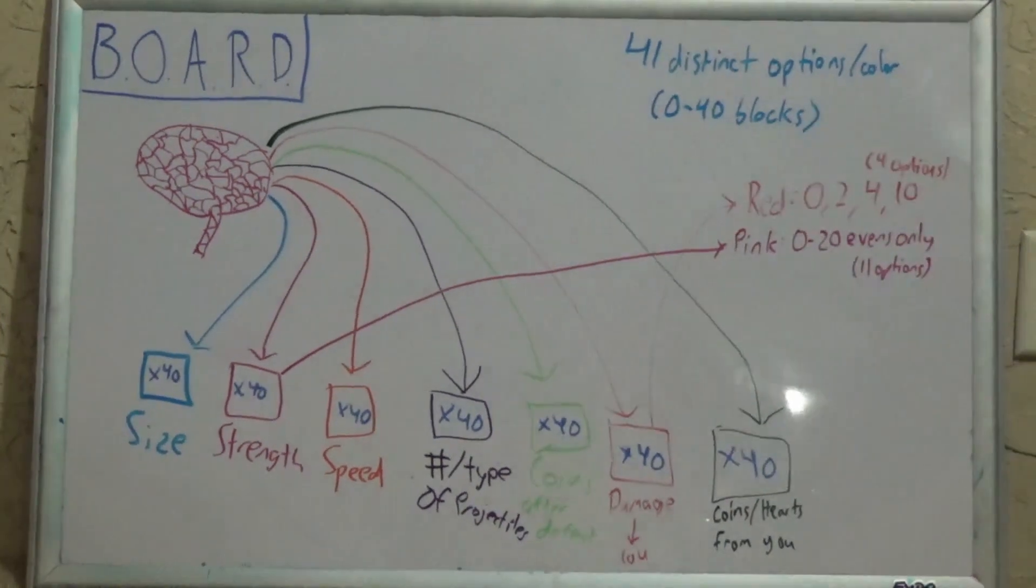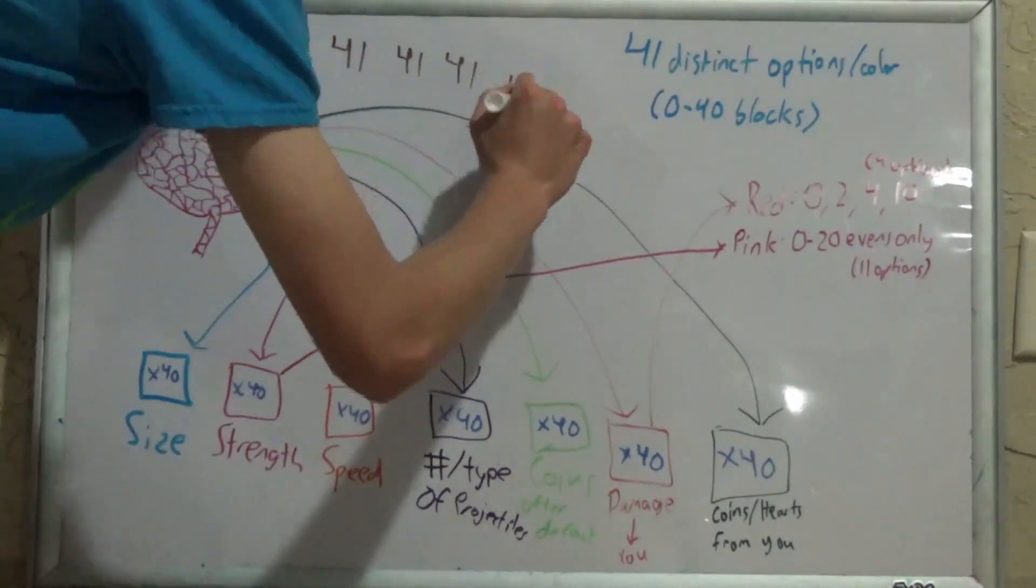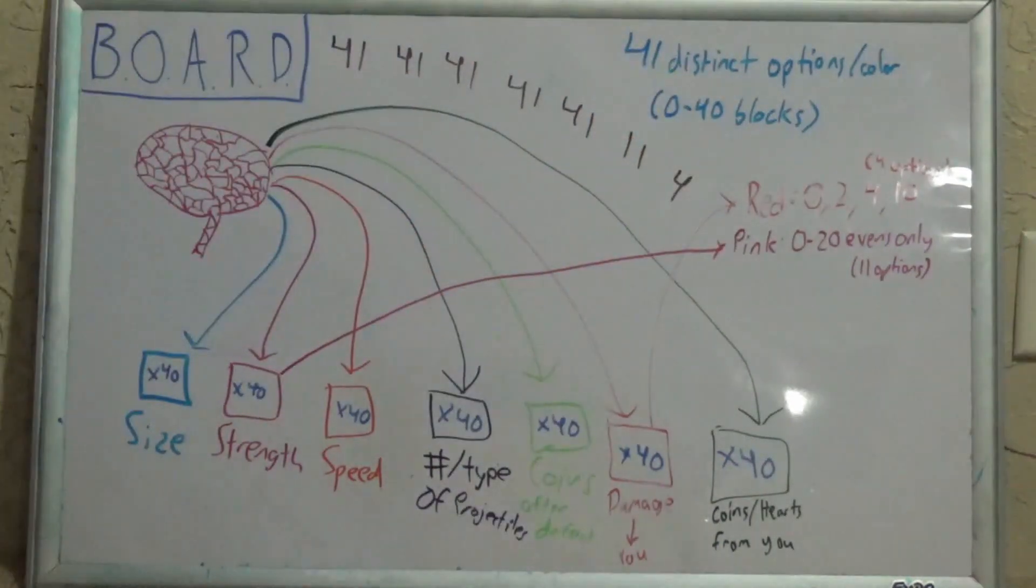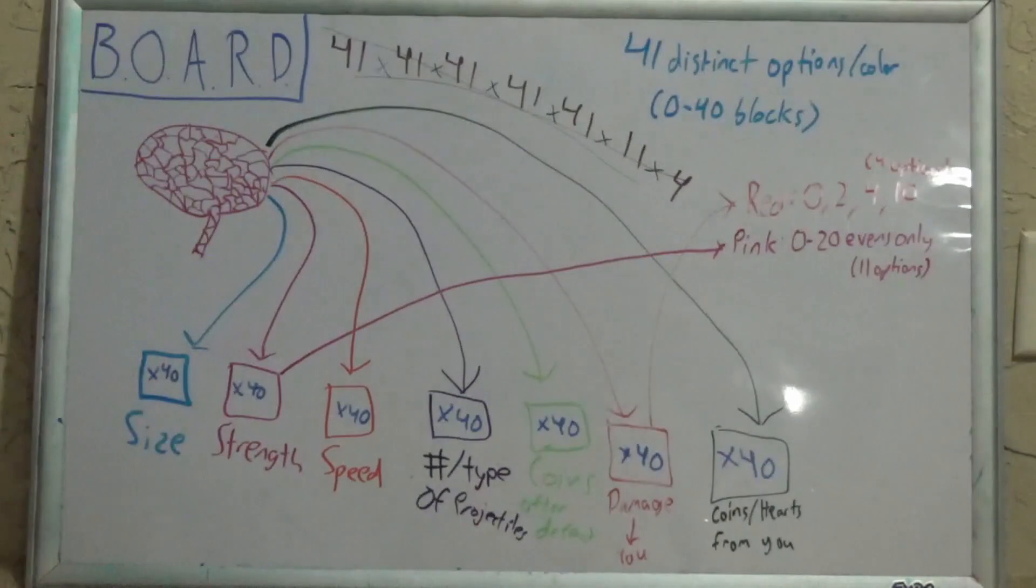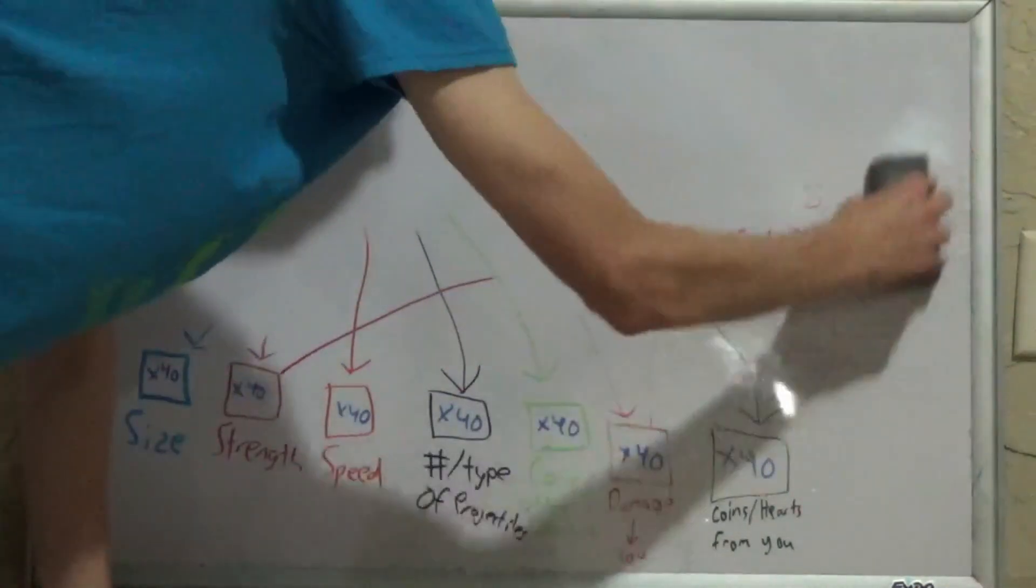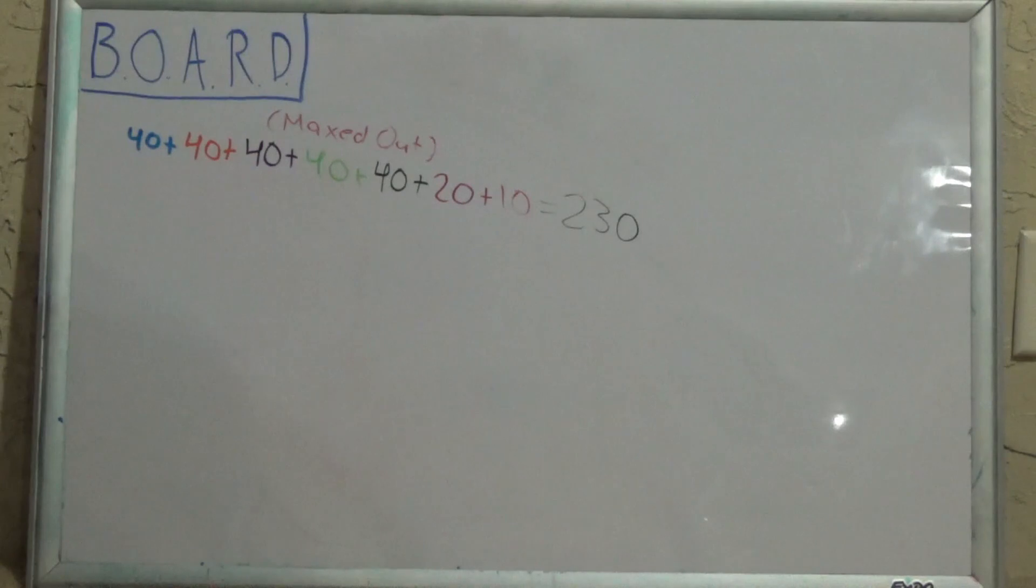Calculating the number of combinations you can make should be easy from here. There are 41 options for 5 different colors, a color with 11, and another with 4. All we have to do is multiply them all, right? No, this is a 13-minute video, and I am determined. This does give us the answer we want, if there is no limit to how many blocks you can have in a brain. If we have 40 blue, orange, purple, yellow, and green blocks, with 20 pink blocks and 10 red blocks, the maximum for each color, we get a total of 230 blocks.